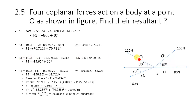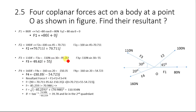Force F3 makes an angle of 30 degrees with the horizontal but acts in the opposite x-direction, so its x-component is negative: −100 cos 30° = −95.262 newtons. Using sine theta, the y-component of F3 is 55 newtons.